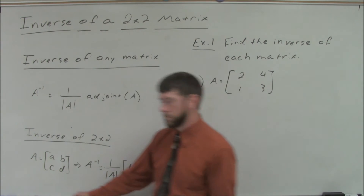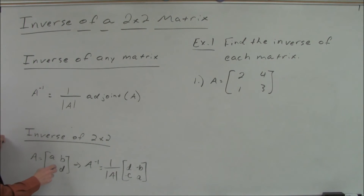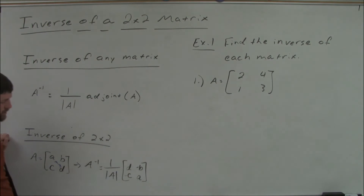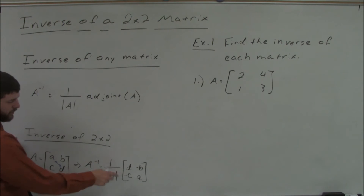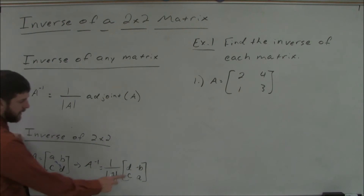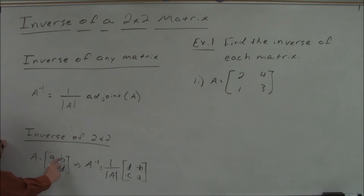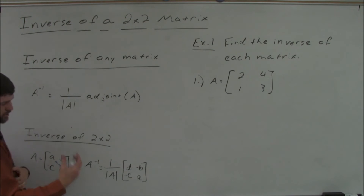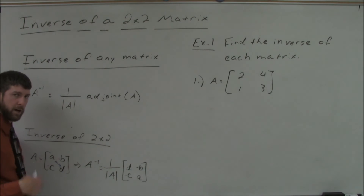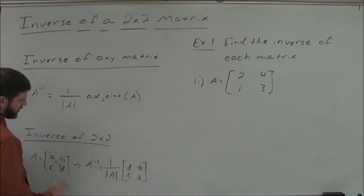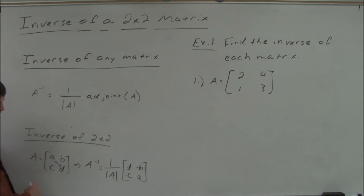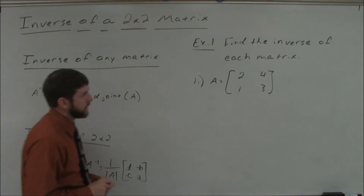To get the adjoint matrix for a 2x2, you swap the positions of the main diagonal elements, and you change the signs on the other diagonal — the right-handed diagonal. So swap your left-handed diagonal, change the sign on your right-handed diagonal. That's it for the adjoint of a 2x2.